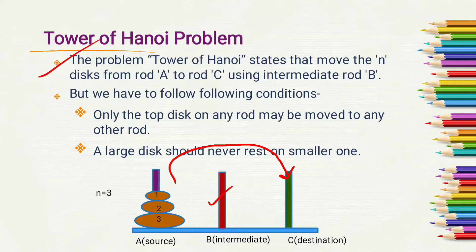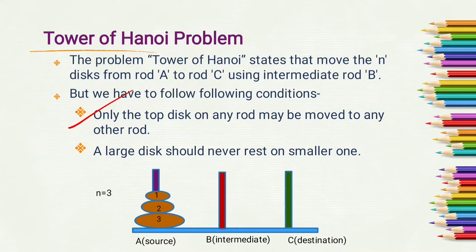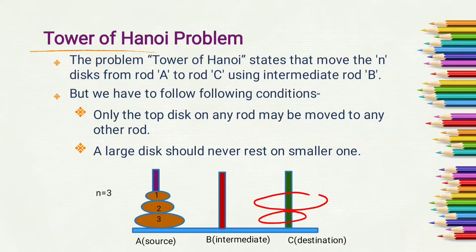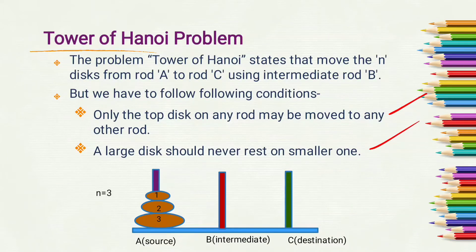There are conditions while placing disks on rod C. First, only the top disk on any rod may be moved to any other rod — you cannot move a lower disk until you remove the disk above it. Second, a larger disk should never rest on a smaller one. These are the two conditions we must follow while moving disks from rod A to rod C.